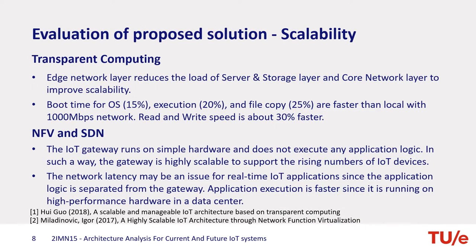Now we are going to talk about the evaluation of proposed solutions for scalability. The transparent computing architecture uses the edge network layer to reduce the load of the server and storage layer and the core network layer to improve scalability. The boot time for the operating system is 50% faster than the local one. For execution it is 20% faster, and for file copy it is 25% faster. Read and write speed is 30% faster with a 1000MB network.